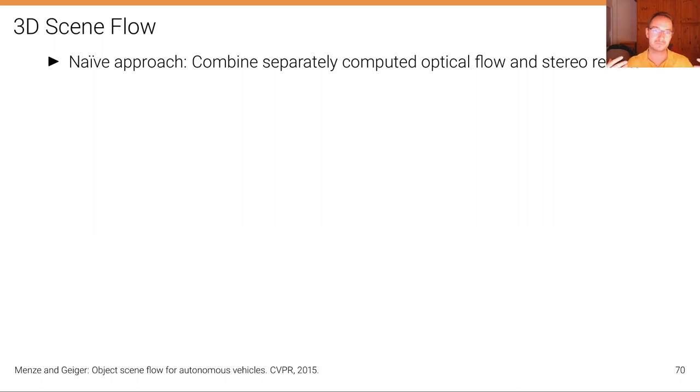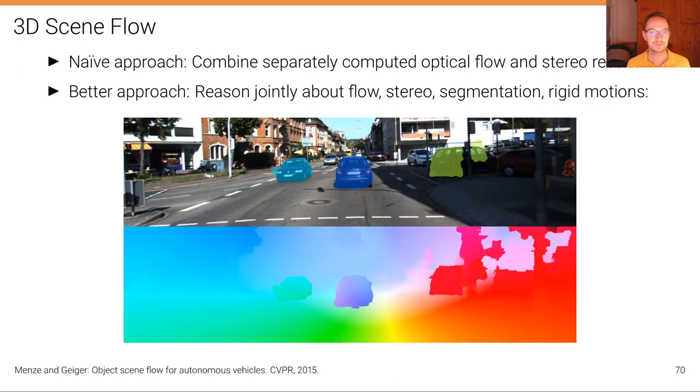which is of course very useful when estimating correspondences for optical flow where we have this hard problem, this unconstrained 2D search problem. So a better approach is to reason jointly about flow, stereo, maybe even segmentation and rigid motions.